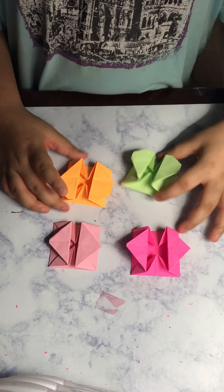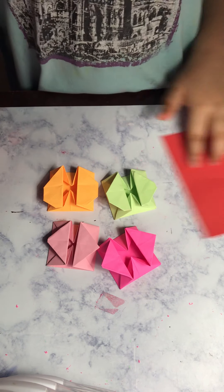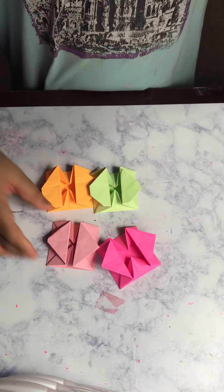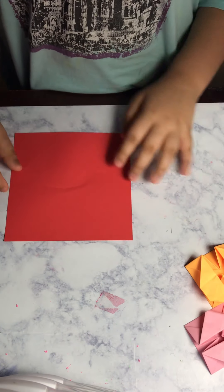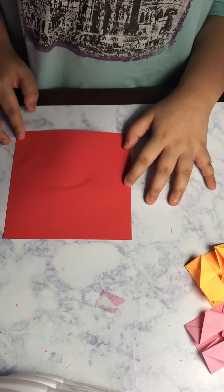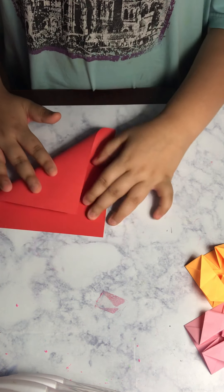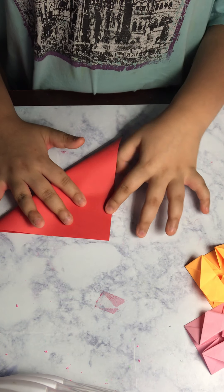I made four and now I'm going to make a color red. So it's pretty simple. First you get a 15 by 15 centimeter origami paper. Then you fold it this way.